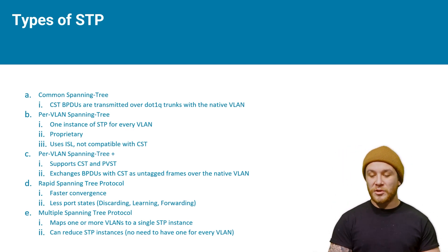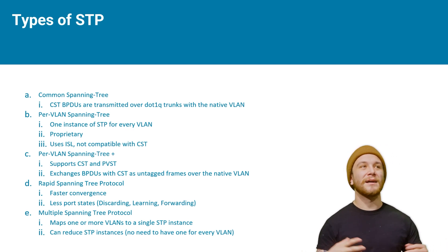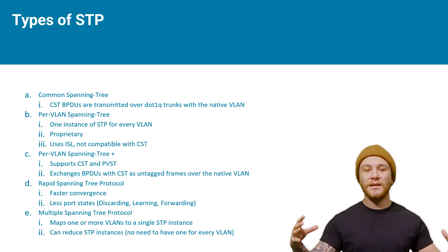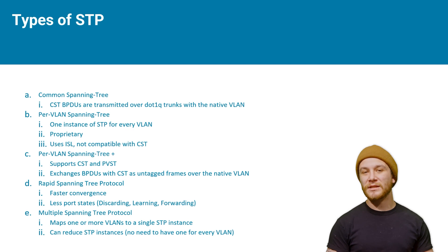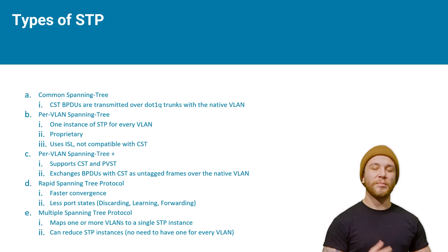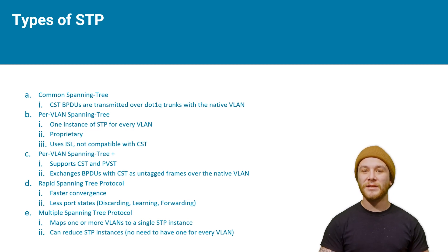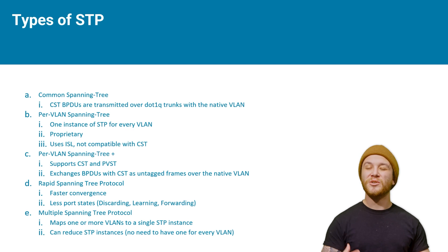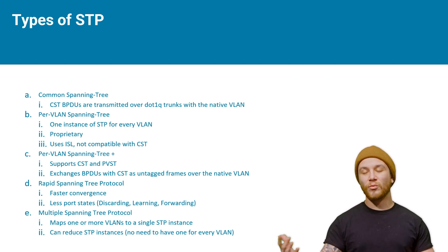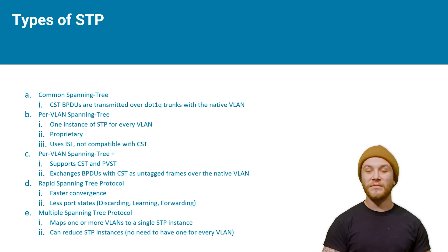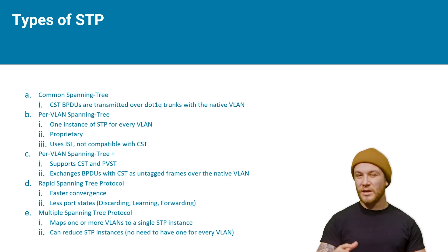We've got different types of spanning tree. Common spanning tree is one instance for every switch, which is great, but your traffic for one VLAN isn't necessarily cohesive for the topology spanning tree created. So Cisco came out with per-VLAN spanning tree — it is proprietary — basically one spanning tree instance for every VLAN. It uses an old protocol called ISL, which isn't really cohesive with common spanning tree, so they came out with per-VLAN spanning tree plus, which supports the older common spanning tree and their predecessor PVST.